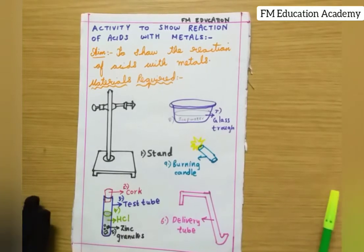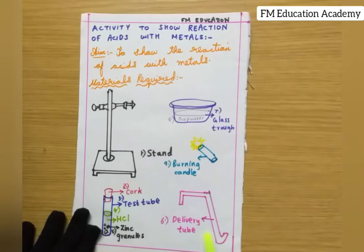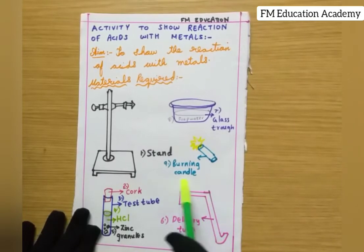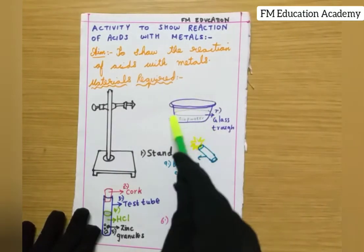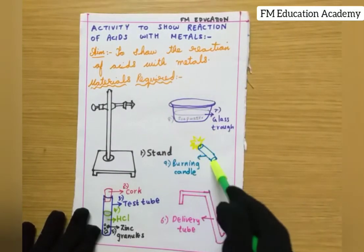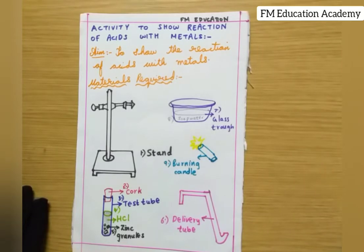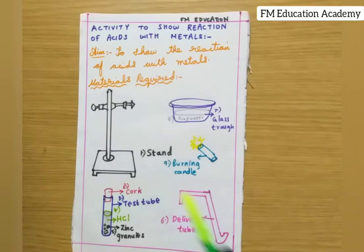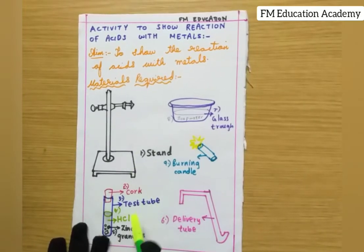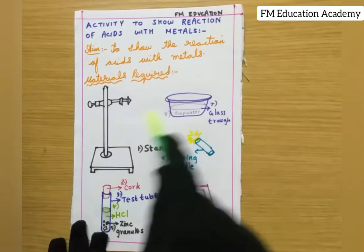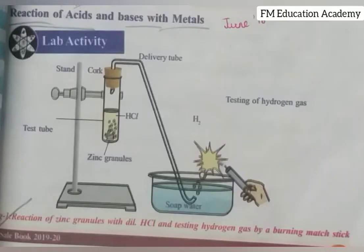We also need a delivery tube, which connects things together, a glass trough containing soap water, and a burning candle. We need the burning candle to test for hydrogen gas, because hydrogen burns with a pop sound when a flame is brought near it. That pop sound is a property of hydrogen. These are all the materials required.